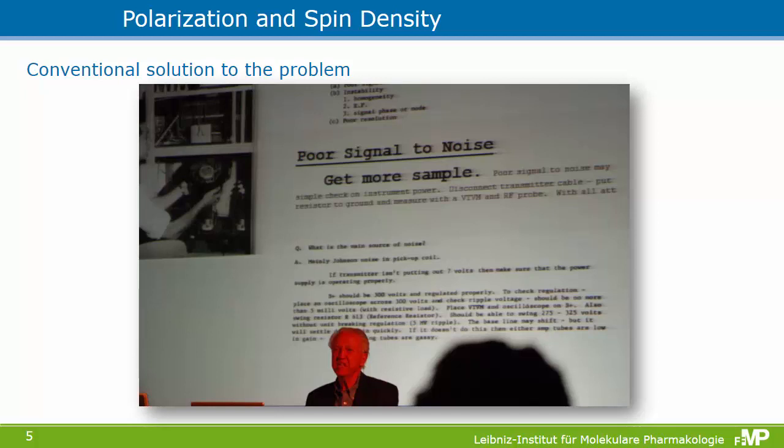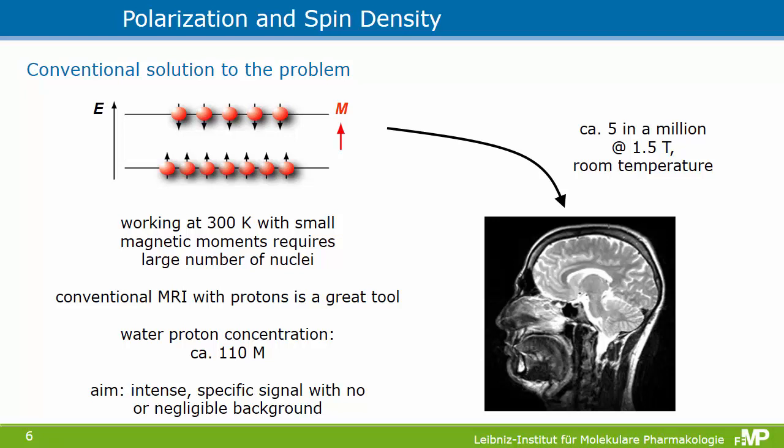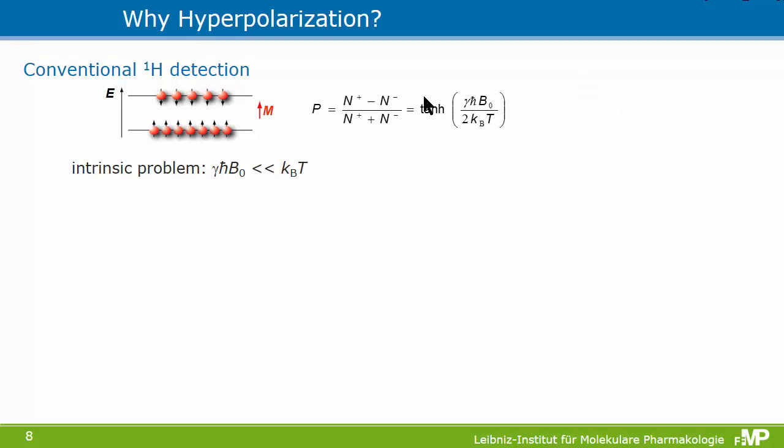The aim of hyperpolarization techniques is to go from a condition with very small overpopulation to a condition with an artificially increased overpopulation, giving a tremendous enhancement in the magnetization so that we can detect things at much lower concentrations. As a rule of thumb, at an external field of 1.5 Tesla only five in a million spins contribute at room temperature to the signal. Conventional imaging works because we have a large spin pool, but hyperpolarization aims for an intense specific signal with no or negligible background.